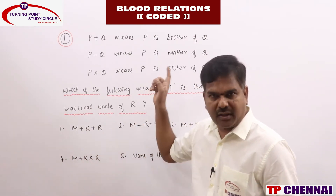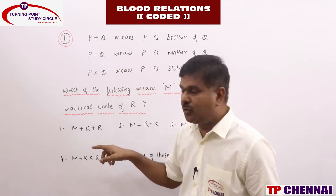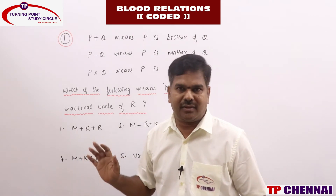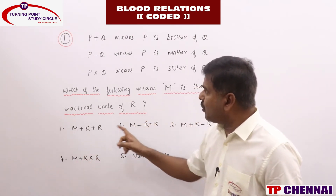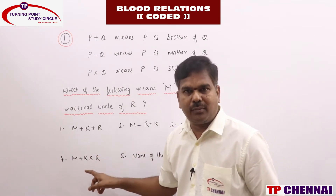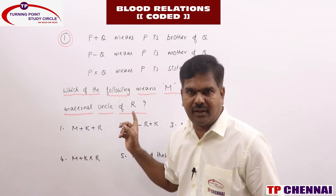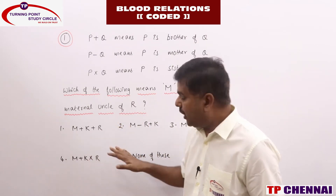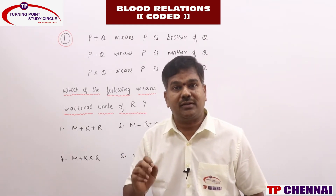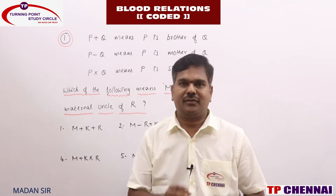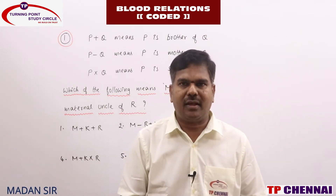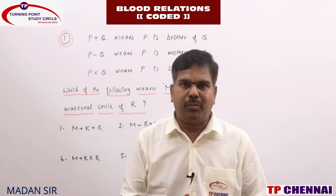We need to construct a family tree based on the given conditions. Once you find out M is the maternal uncle of R, that option is the right answer. For a single problem, you are working out almost four times. Even if all four options don't give M as maternal uncle, you need to go with the fifth option. We do have shortcut methods, and this is the most important section in blood relations. In most exams, they will ask from Type 3 problems — sometimes four or five questions.